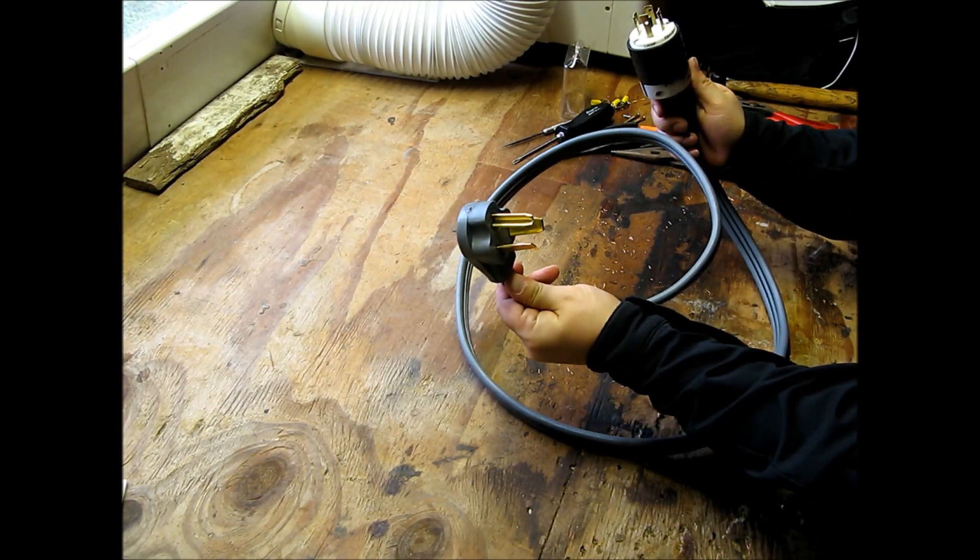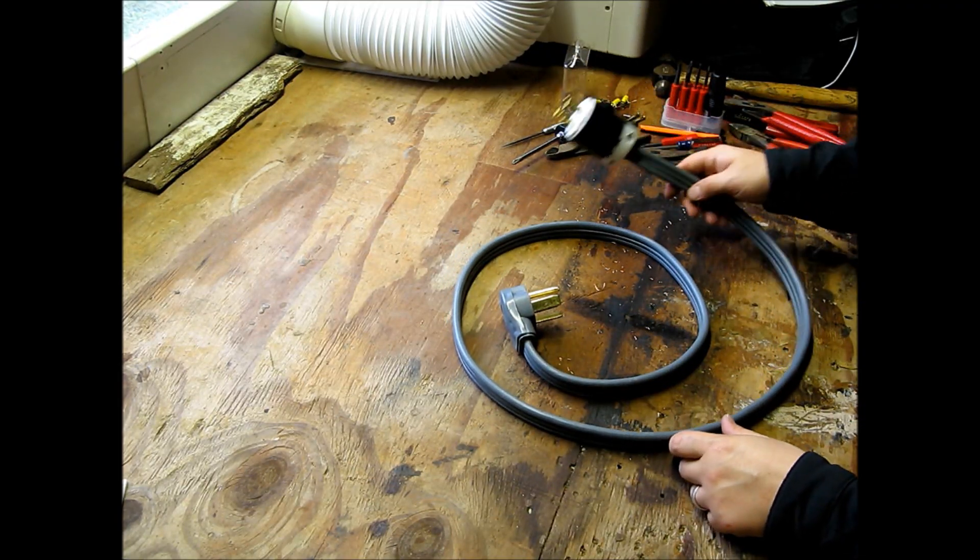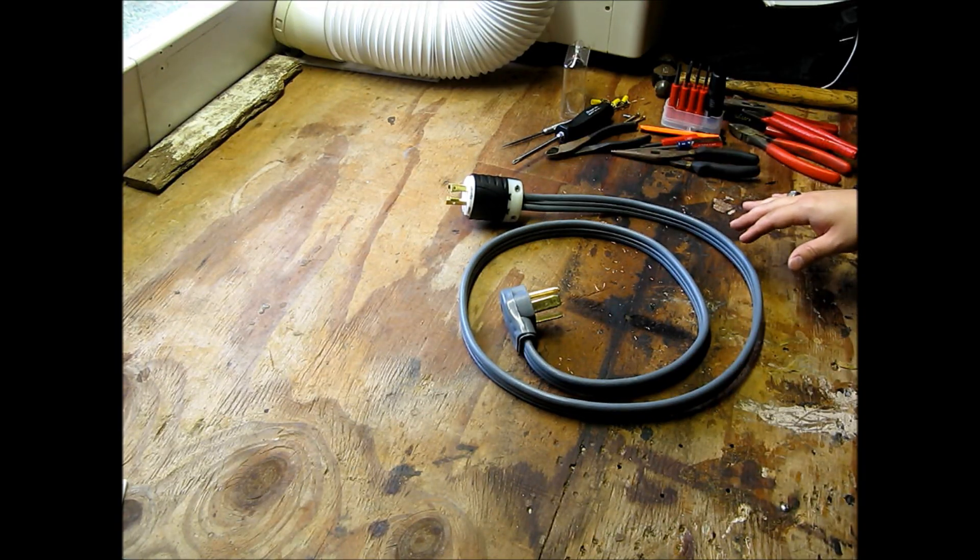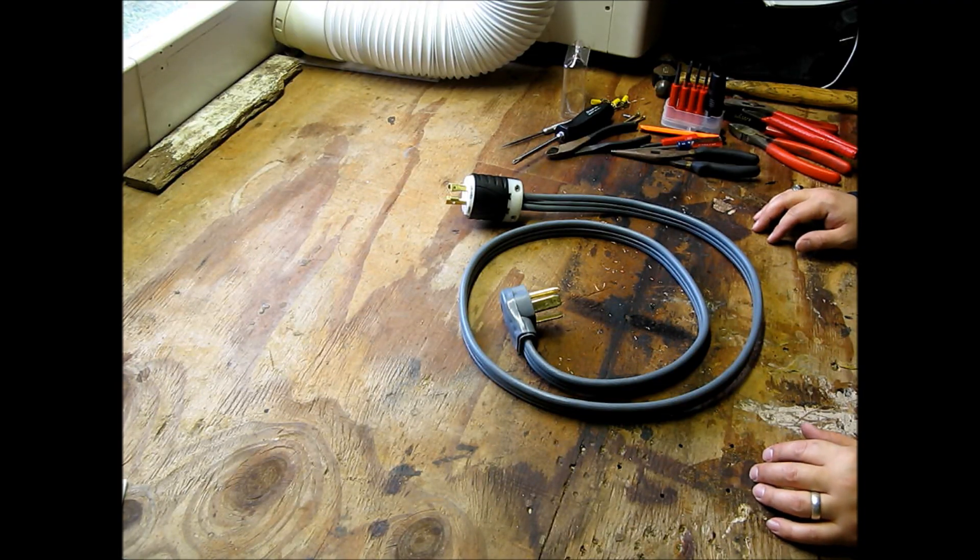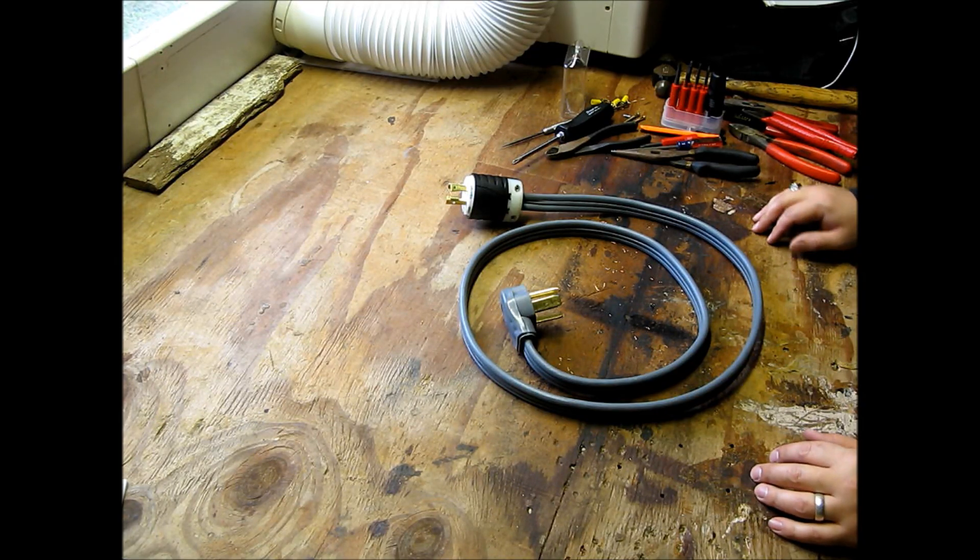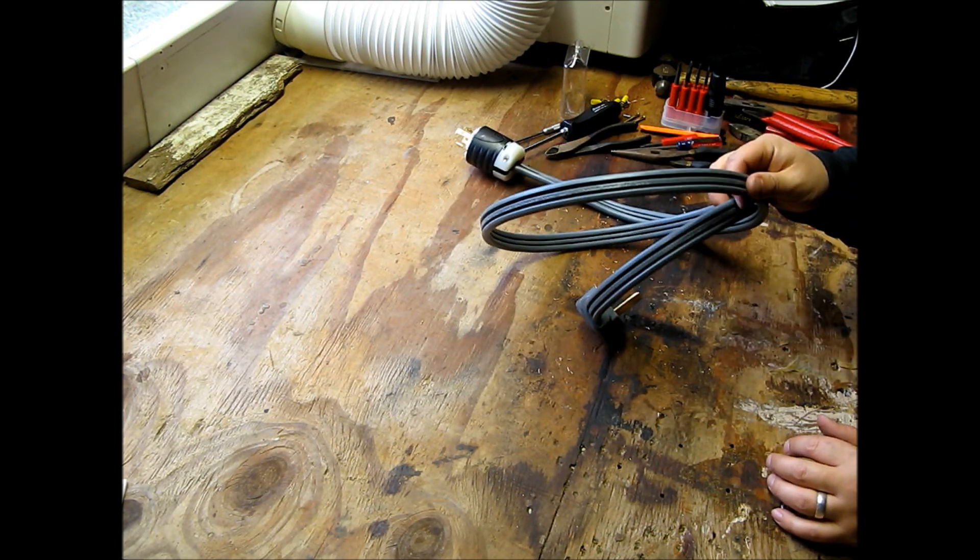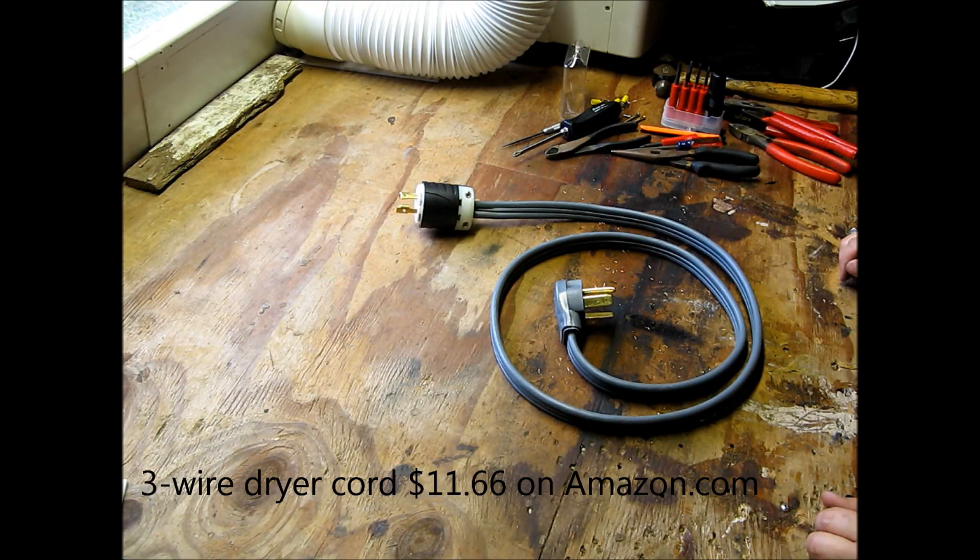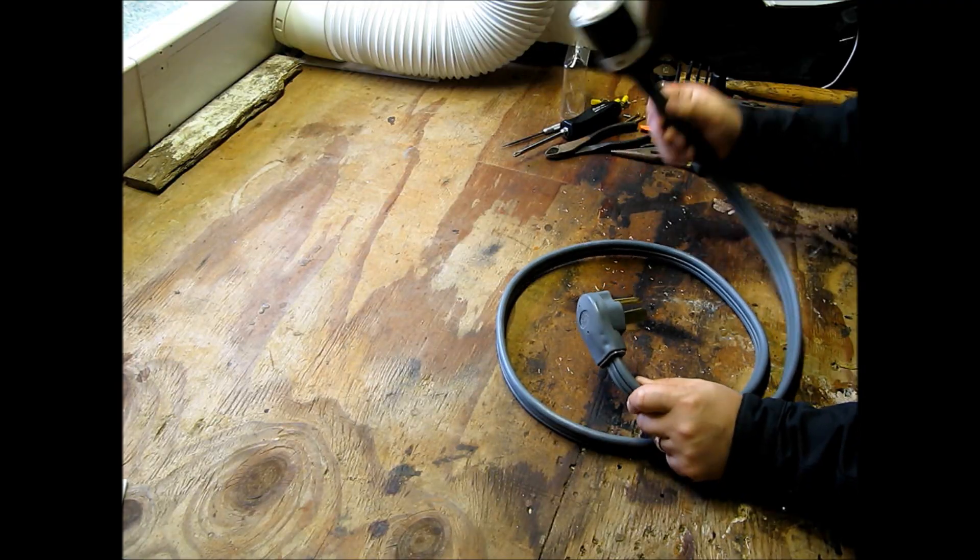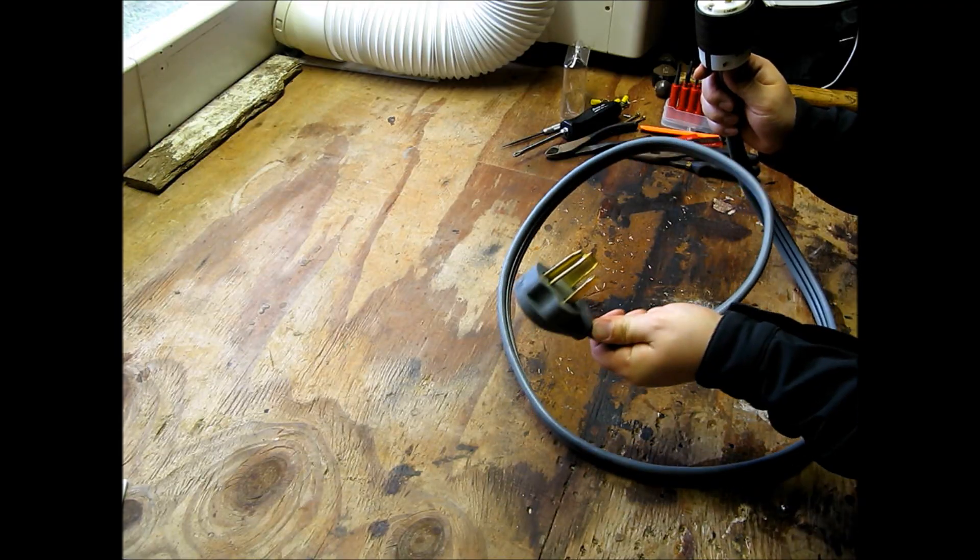Now, the reason why I personally like to do it this way is because I have a hard time buying a $200 extension cord and basically making it useless by cutting the end of it off and putting one of these plugs on. I'd much rather buy this for, it's like I think $15 on Amazon and make an adapter so that this actually plugs into the extension cord and then this plugs into the dryer.